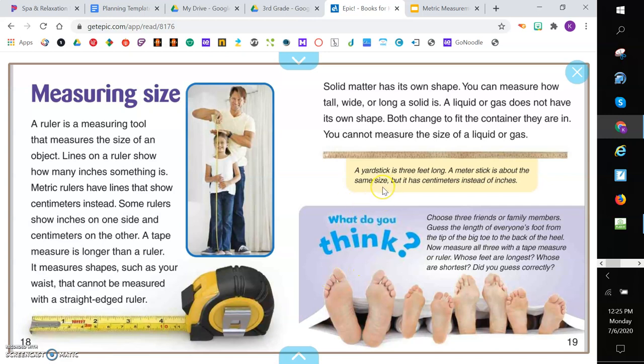Caption, a yardstick is three feet long, and a meter stick is about the same size, but it has centimeters instead of inches. What do you think? Choose three friends or family members and guess the length of everyone's foot from the tip of the big toe to the back of the heel. Now measure all three with a tape measure or ruler. Whose feet are the longest? Whose are the shortest? Did you guess correctly?